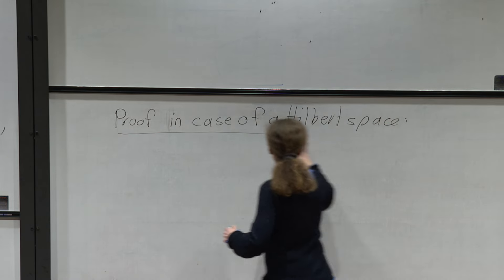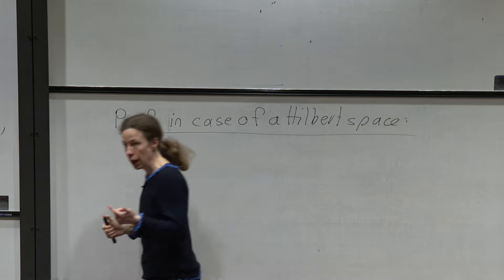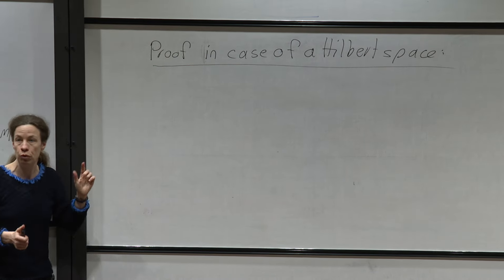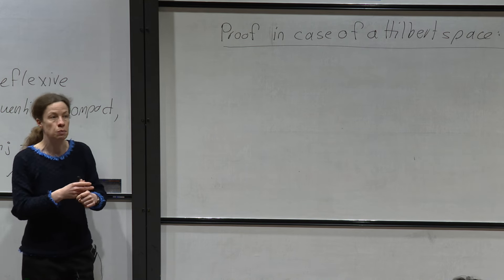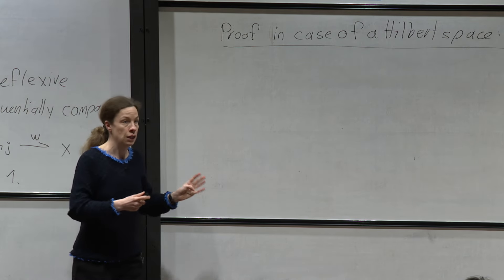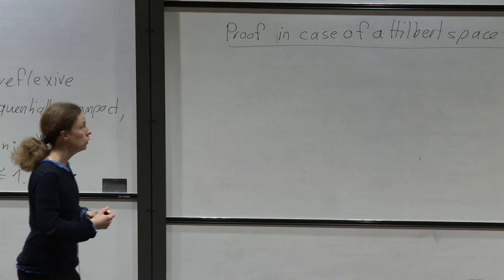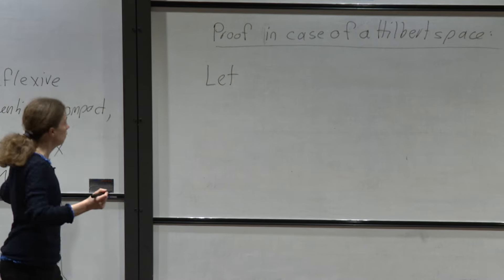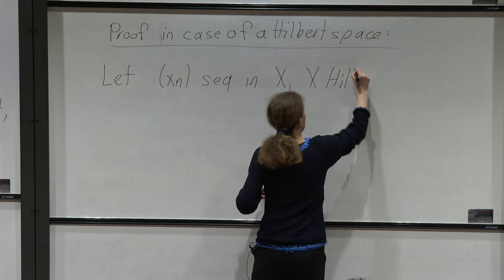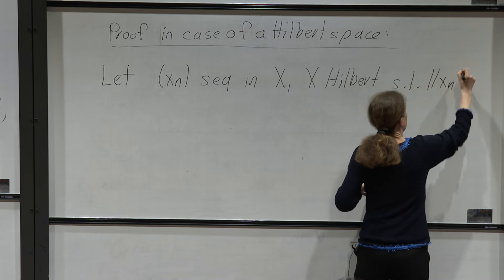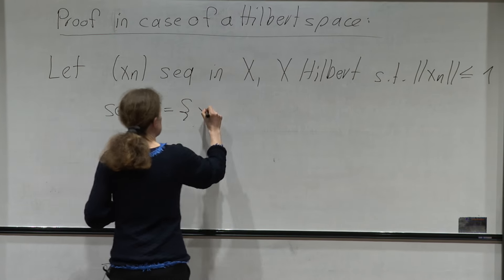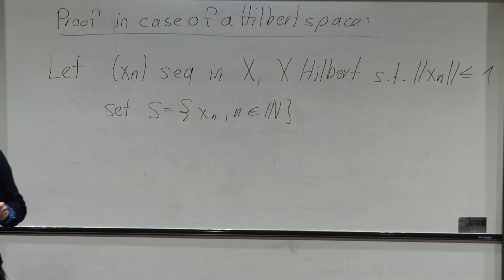We want to cheat a little and not prove in full generality, but not too much. Cheating too much would be to take a separable Hilbert space — that would make things quicker via a diagonal sequence argument on a countable dense subset. Here we have to be more careful. So let's take xn to be a sequence in X, X a Hilbert space, such that the norms of xn are all less than or equal to 1. Let S be the set of all these elements {xn}.